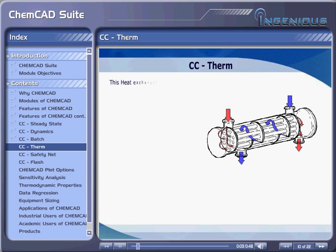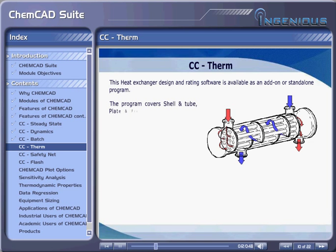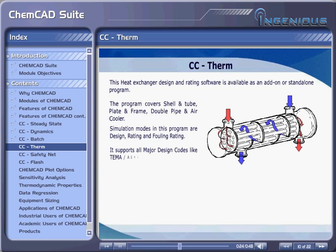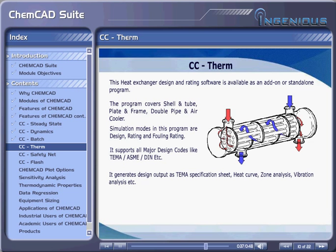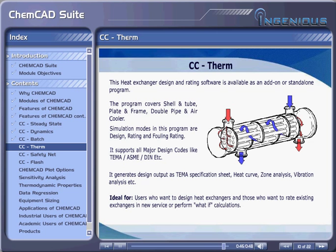CC Thermal. This heat exchanger design and rating software is available as an add-in or stand-alone program. The program covers shell and tube, plate and frame, double pipe, and air cooler. Simulation modes in this program are design, rating, and fouling rating. It supports all major design codes like TEMA, ASME, DEAN, etc. It generates design output as TEMA specification sheet, heat curve, zone analysis, vibration analysis, etc. It is ideal for users who want to design heat exchangers or rate existing exchangers in new service, or perform what-if calculations.